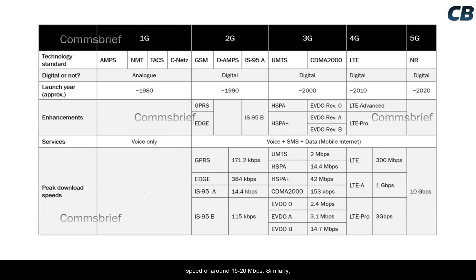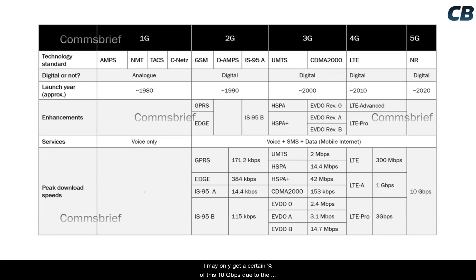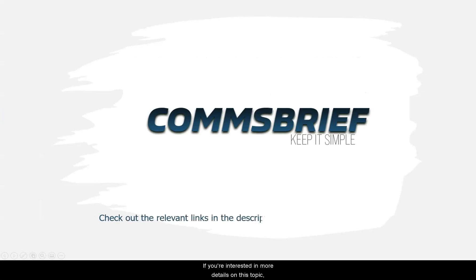With LTE Advanced networks, average download speeds of about 65 to 100 Mbps are possible. 5G networks can generate up to 10 Gbps of download speeds, though as a user you may only get a certain percentage of that due to network conditions and the number of people accessing the network simultaneously. If you're interested in more details on this topic, check out the links in the description below.